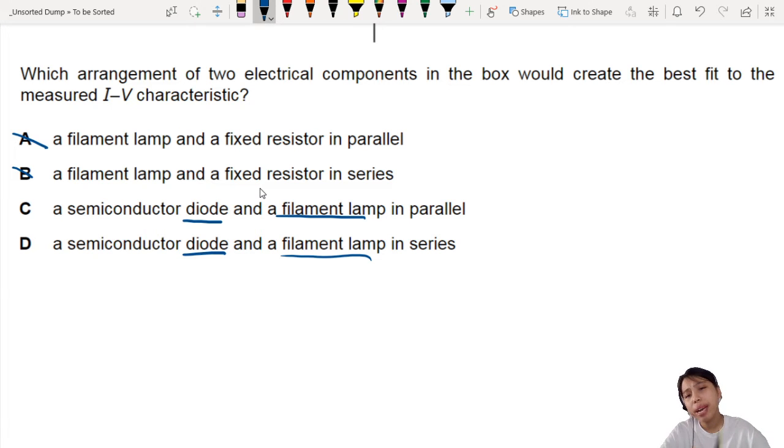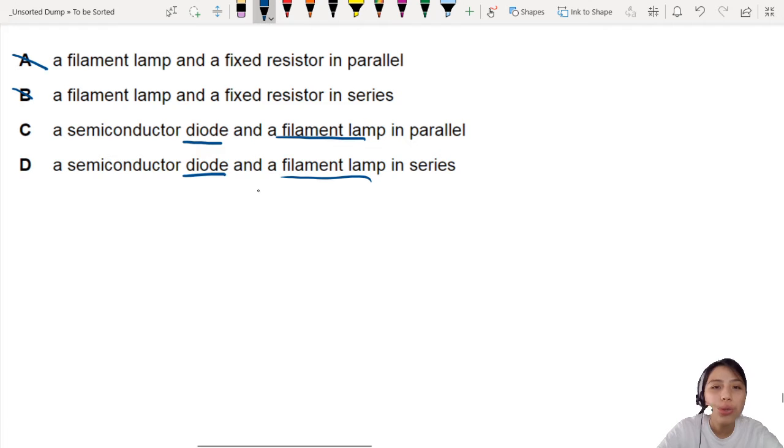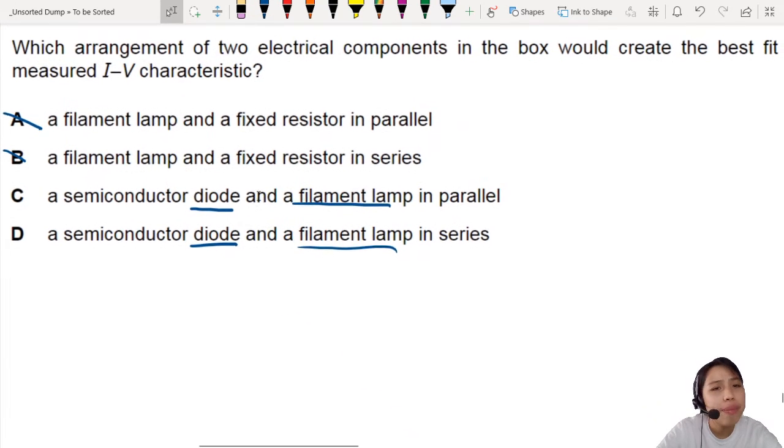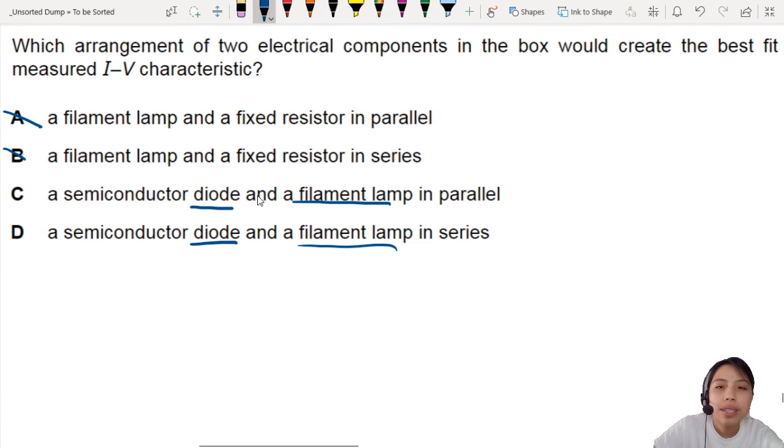Now then we are stuck. Is it parallel or series? But since we are here, let us draw everything out to see how we can eliminate choices. Why not A and B? Let's look. Let's start with A, filament lamp and a fixed resistor in parallel.